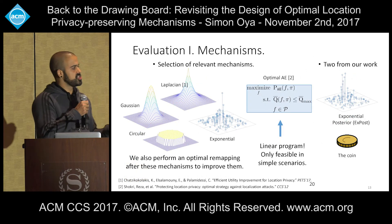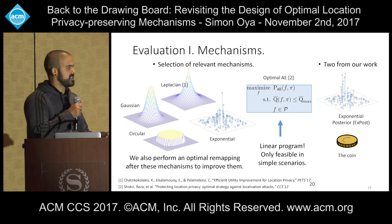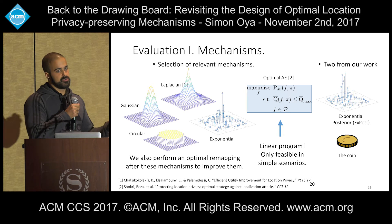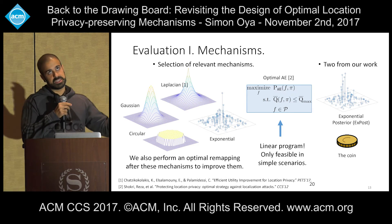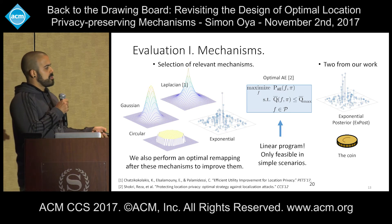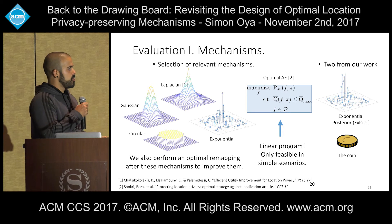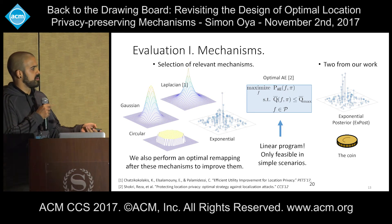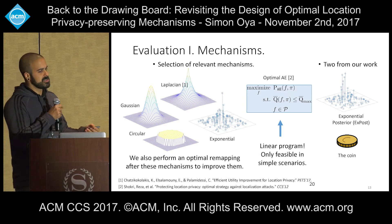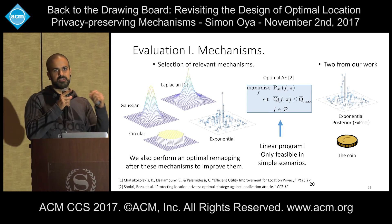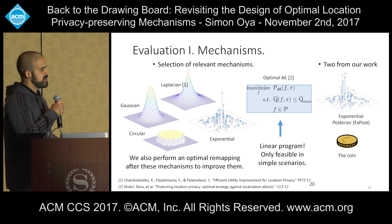For our evaluation, we selected a set of relevant mechanisms: the Laplacian mechanism with remapping proposed at PETS this year, Gaussian noise with remapping, circular noise, and the exponential mechanism that ensures geo-indistinguishability — which is like differential privacy adapted to location privacy. We performed remapping after each of these mechanisms since it always improves utility and never harms privacy. We also evaluate the optimal mechanism by Shokri et al., which maximizes average error given a constraint on average loss via a linear program, though this can only be evaluated in small maps with a discrete number of points of interest. Finally, we evaluate the exponential posterior mechanism we propose — which maximizes conditional entropy — and the coin mechanism.